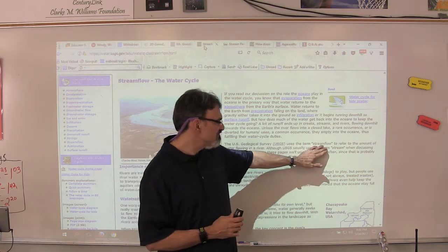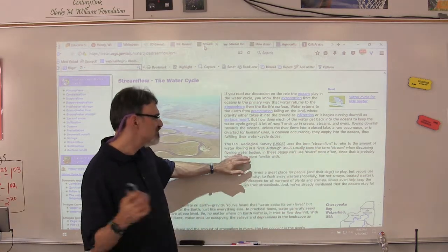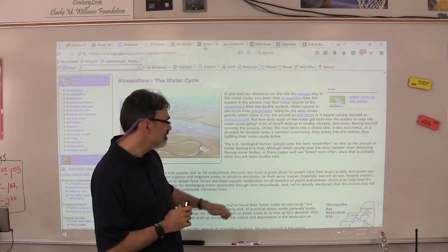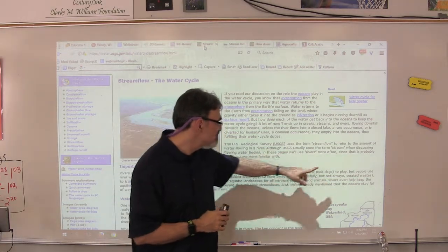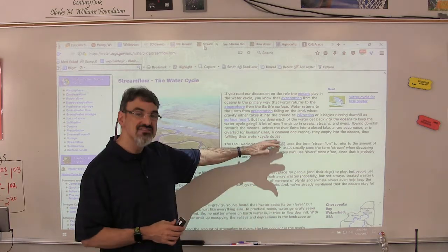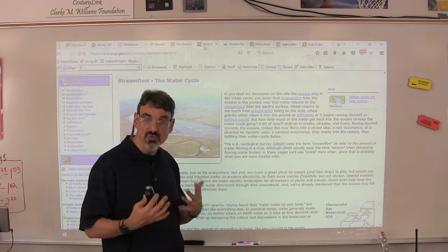The USGS uses the term stream flow to refer to the amount of water flowing in a river. They use the term stream when discussing flowing water bodies, and use the word rivers more than streams here.